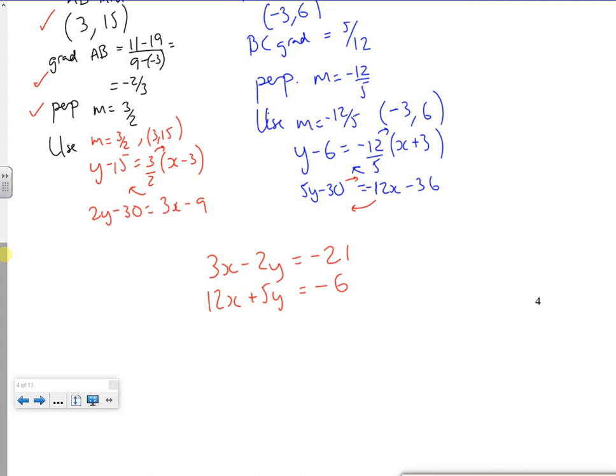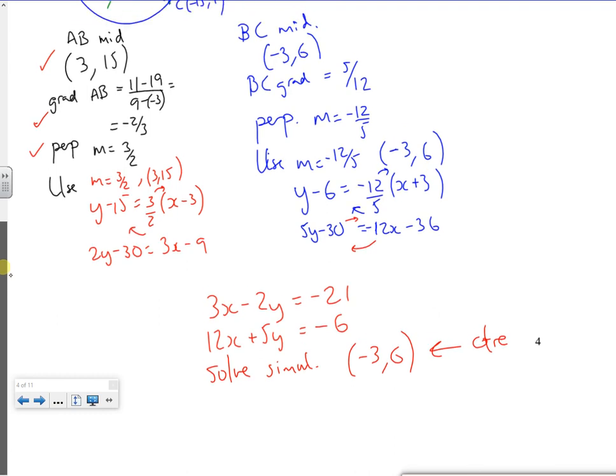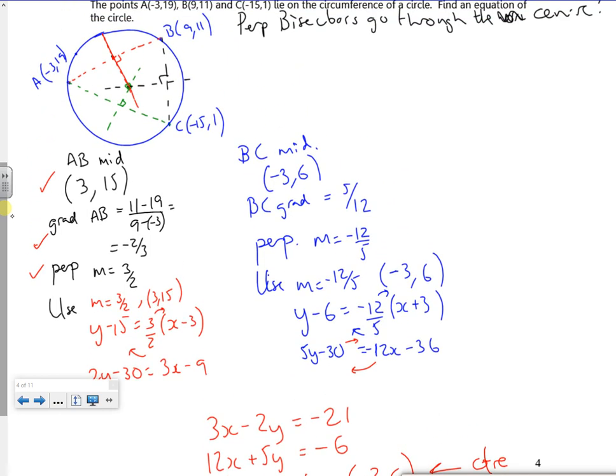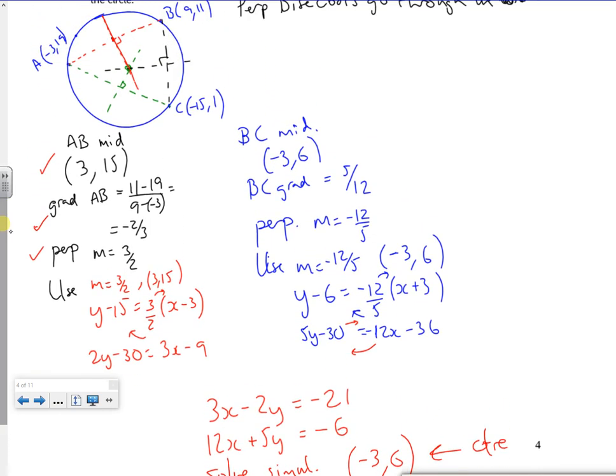Oof. If I solve them simultaneously, I get minus 3, 6. So that there is the centre of my circle. But I've not done yet. I've got the centre. So I know that the centre was minus 3, 6.